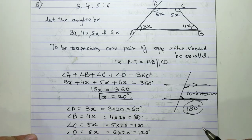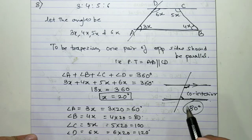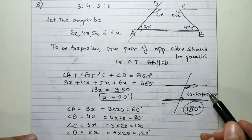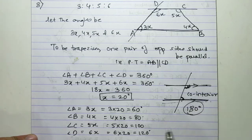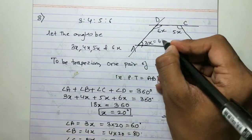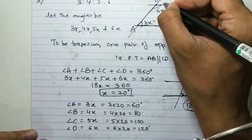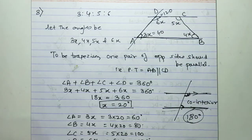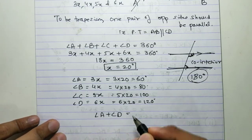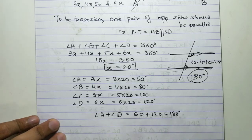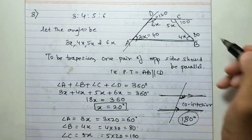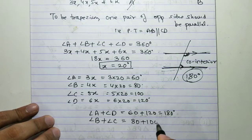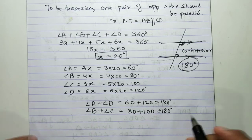The reverse of this: if the sum of those two angles is 180 degrees, then the lines are parallel to each other. Here, angle A is 60° and angle D is 120°, so 60 + 120 = 180°. Also, angle B is 80° and angle C is 100°, so 80 + 100 = 180°. Both pairs give 180 degrees.